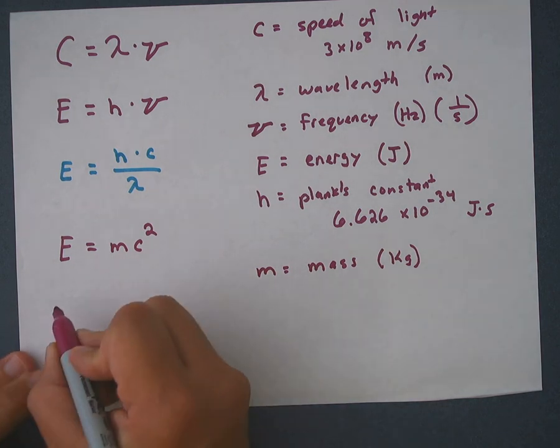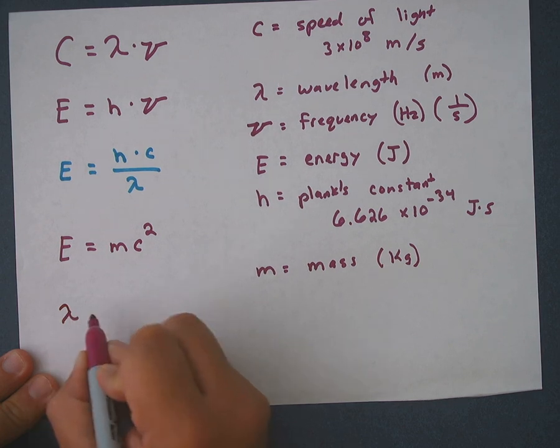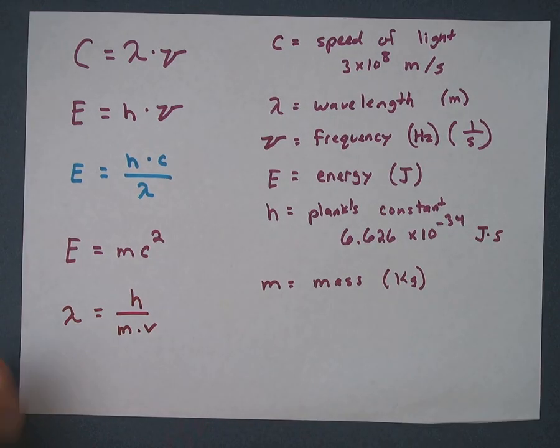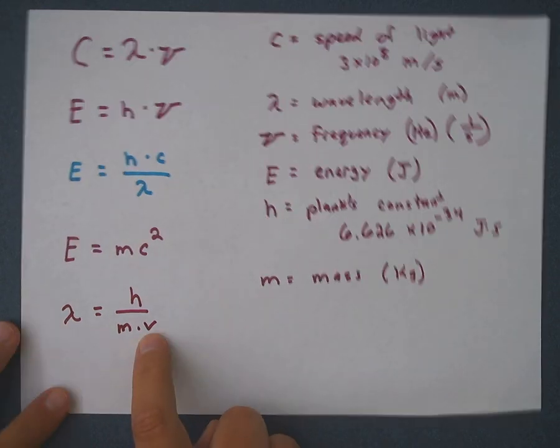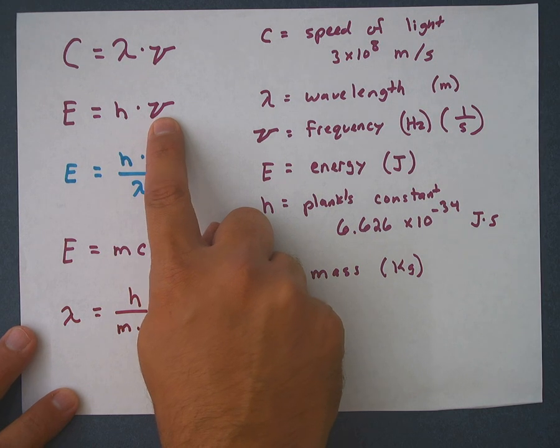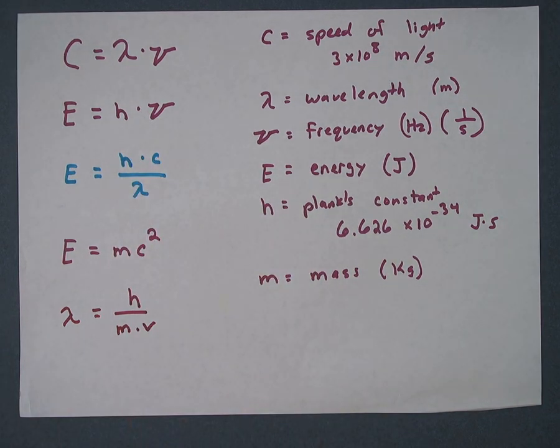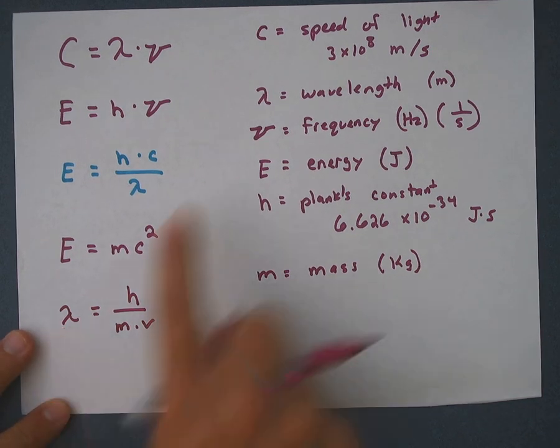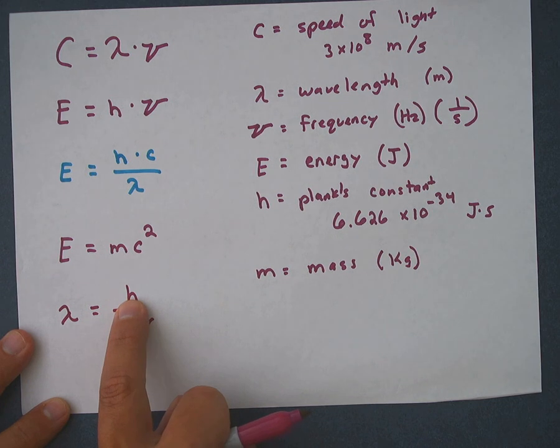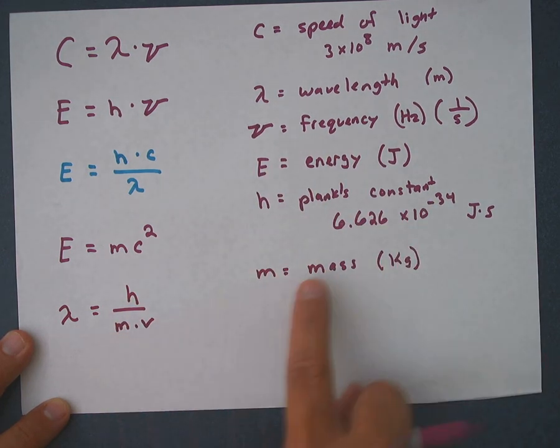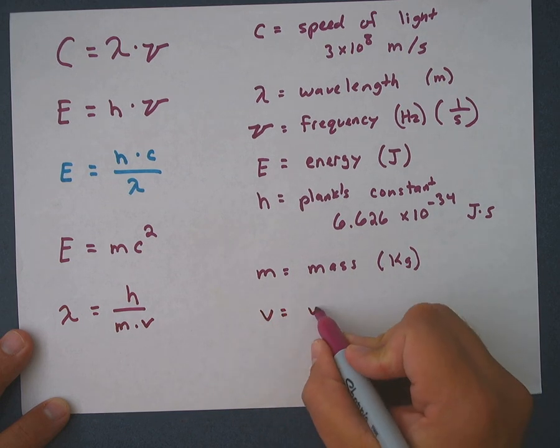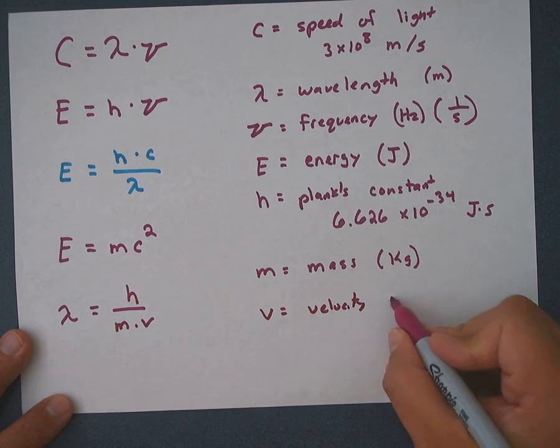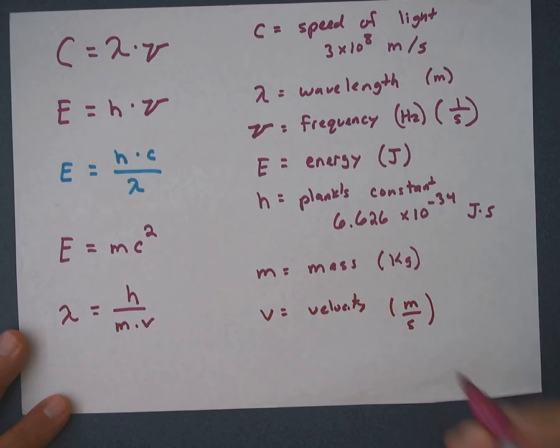The last formula is this: Lambda equals h over m times v. Be careful. This is actually a v. This is a Greek letter nu that looks like an italic cursive v, but this is actually a v for velocity. So we know that this lambda still means wavelength, and h is still Planck's constant, and m is still mass in kilograms. But v is for velocity, or speed is kind of like velocity, and the units for that are meters per second.